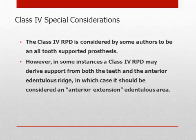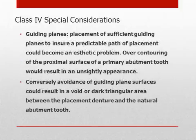The Class IV RPD is considered by some authors to be an all-tooth supported prosthesis. However, in some instances a Class IV RPD may derive support from both the teeth and the anterior edentulous ridge, in which case it should be considered an anterior extension edentulous area. Several potential problems exist concerning Class IV removable partial dentures. Placement of sufficient guiding planes to ensure a predictable path of placement could become an aesthetic problem. Over-contouring of the proximal surface of a primary abutment tooth would result in an unsightly appearance. Conversely, avoidance of guiding plane surfaces could result in a void or dark triangular area between the partial denture and the natural abutment tooth.